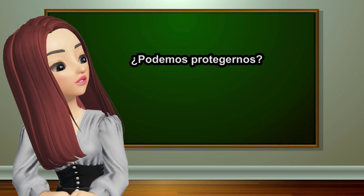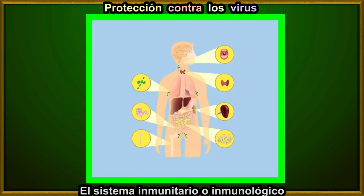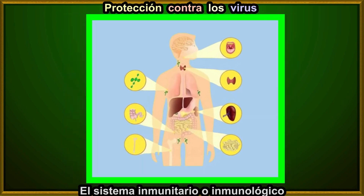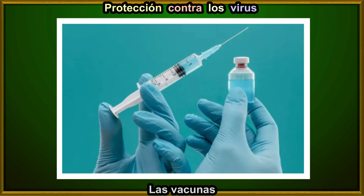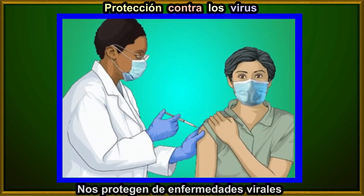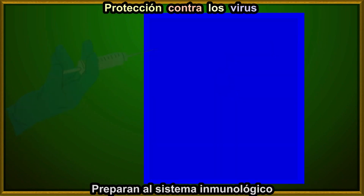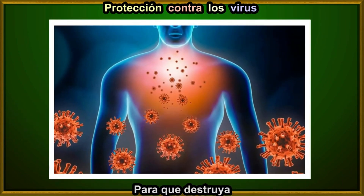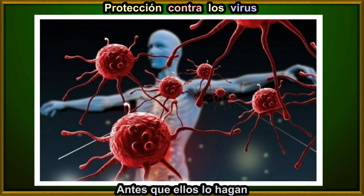Can we protect ourselves from these viruses? Of course. Our body has a defense system known as the immune system that actively fights against harmful viruses and other pathogens. Additionally, vaccines are important to protect us from viral diseases. Vaccines work by training our immune system to recognize and destroy certain harmful viruses before they have a chance to harm us.